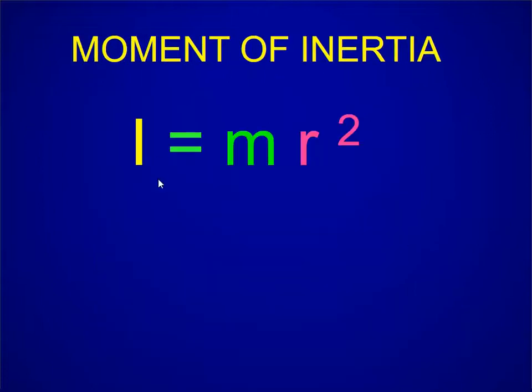And the moment of inertia, the resistance is due to the mass, just like it was in the linear world, but also this distribution of the mass from the center of rotation to the squared power.